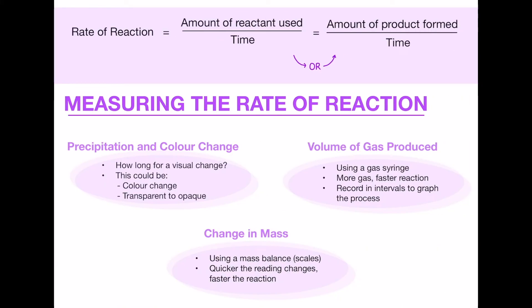Next we have measuring the rate of reaction. So we have an equation up at the top, you can either use the amount of reactant used or the amount of product that is formed over time. There are three ways to measure the rate of reaction in an actual experiment. The precipitation and colour change, for example how long does it take for a visual change, this could be a colour change or the idea of going transparent to opaque. Another one is the volume of gas produced so you could use a gas syringe. The more gas that's produced the faster the reaction is and you can also record how much gas there is at certain time frames which you could then use to graph the process.